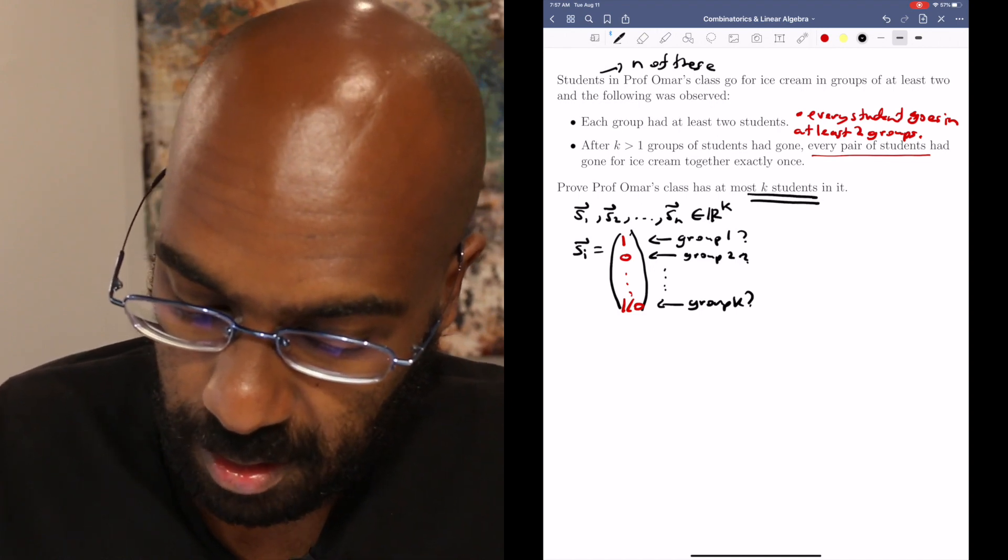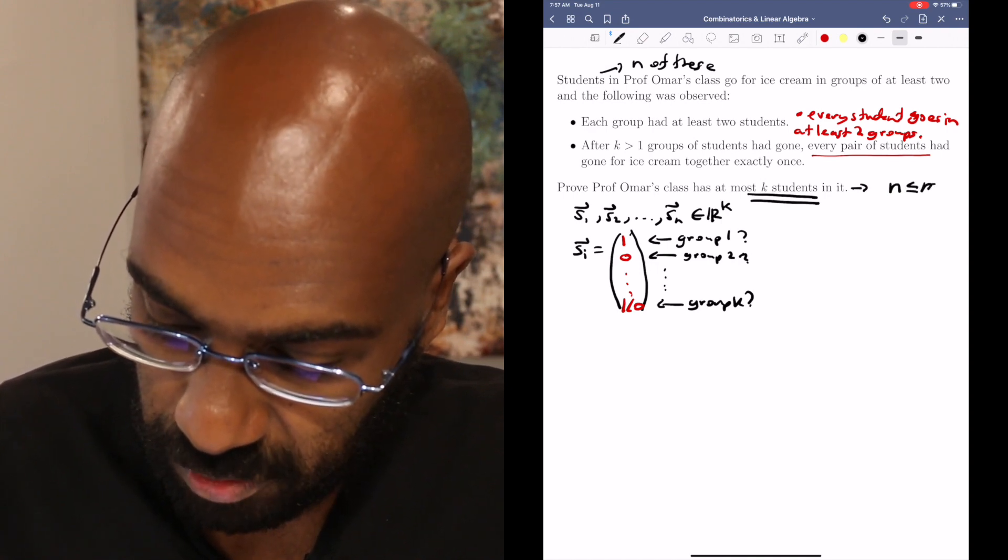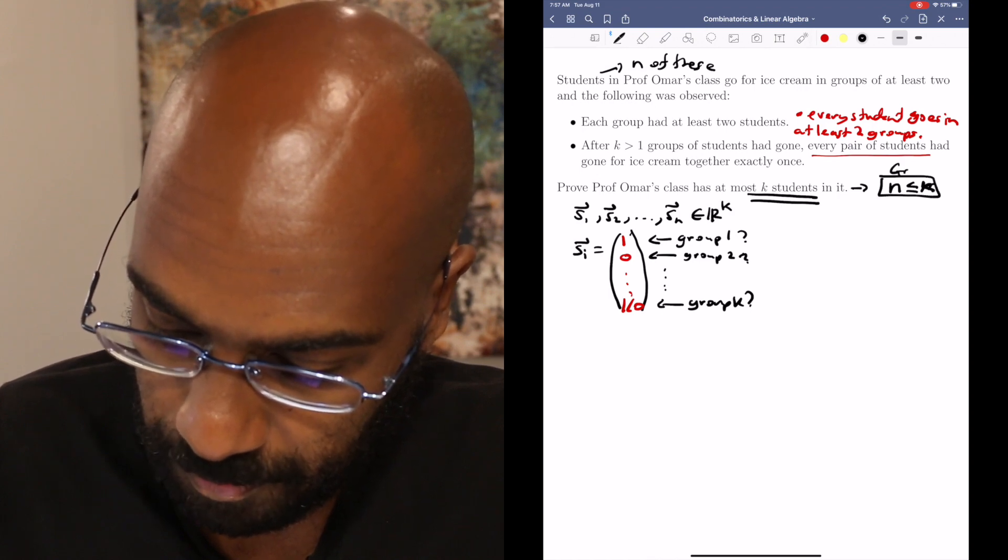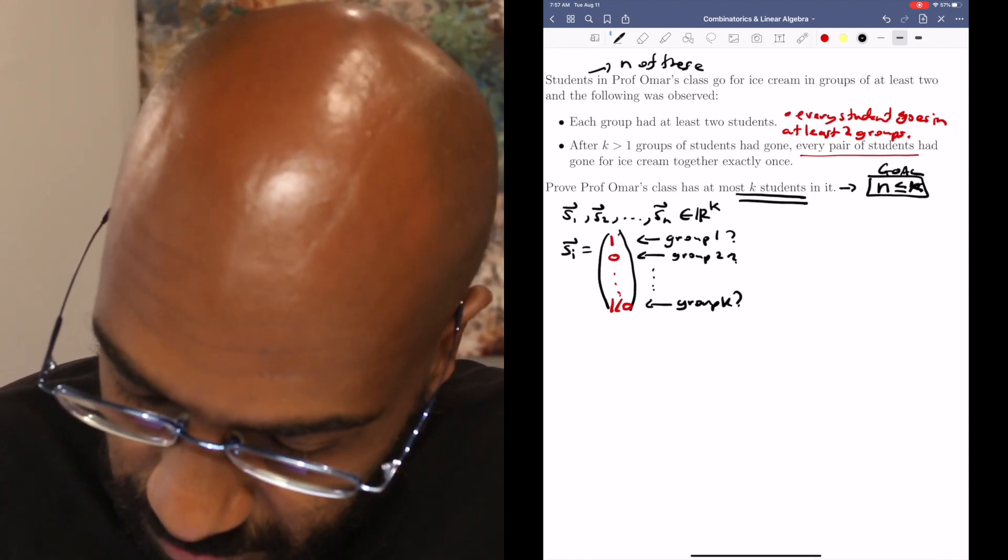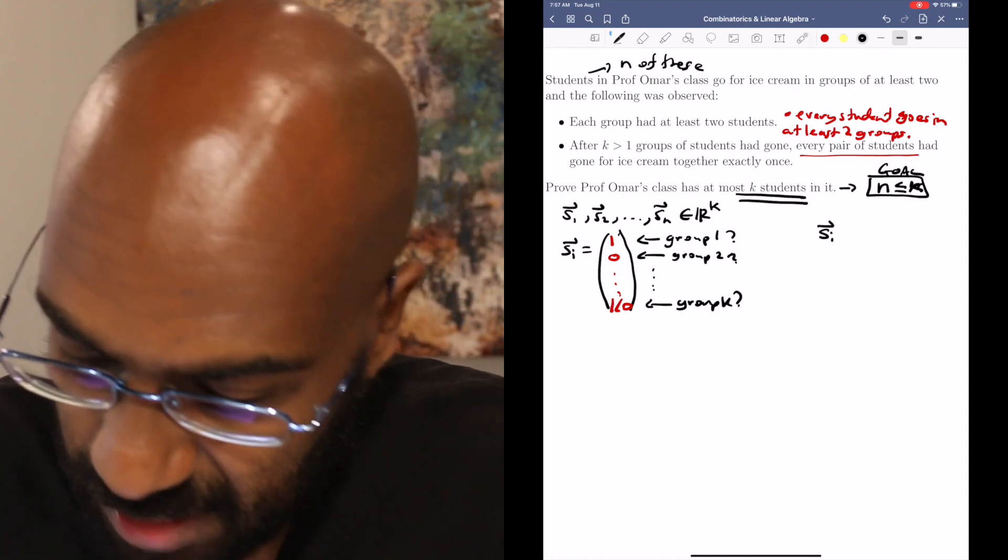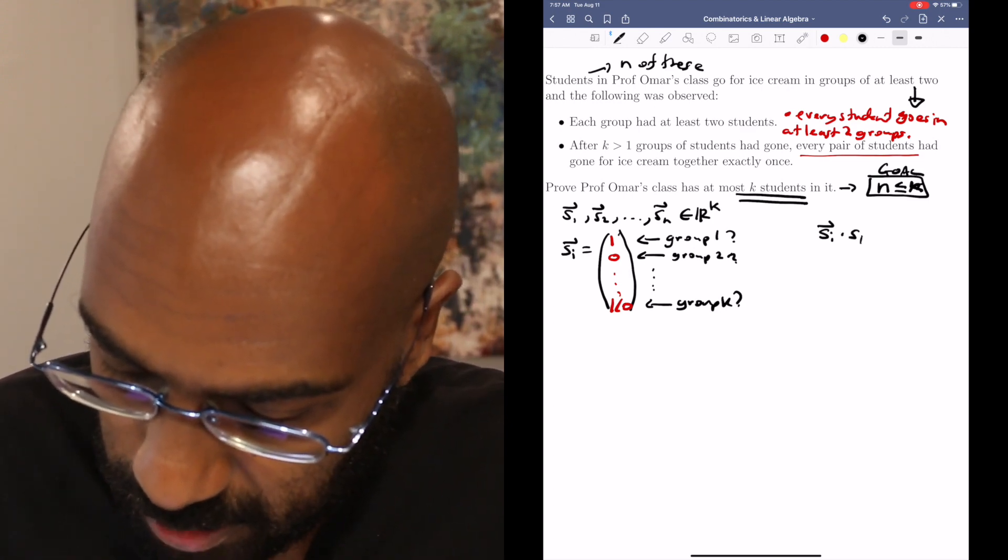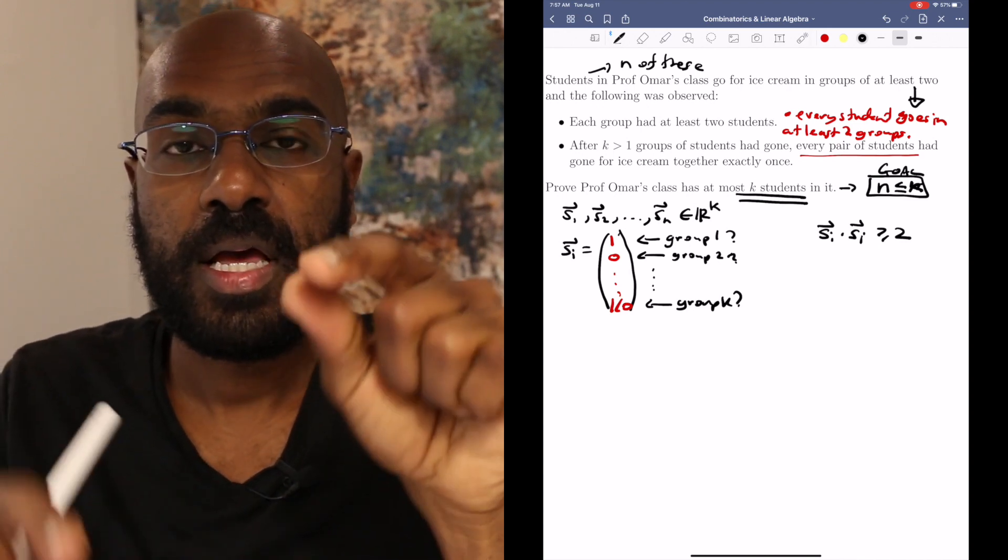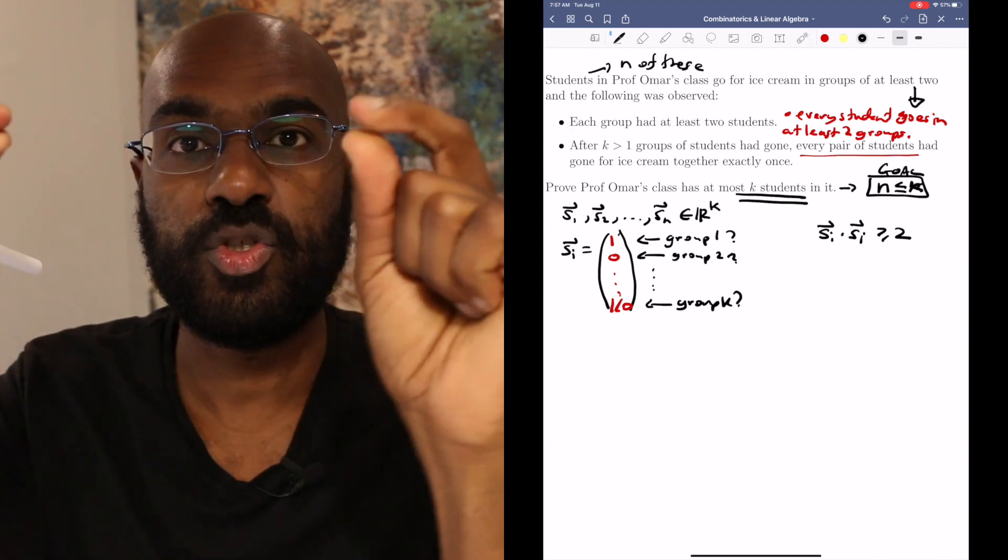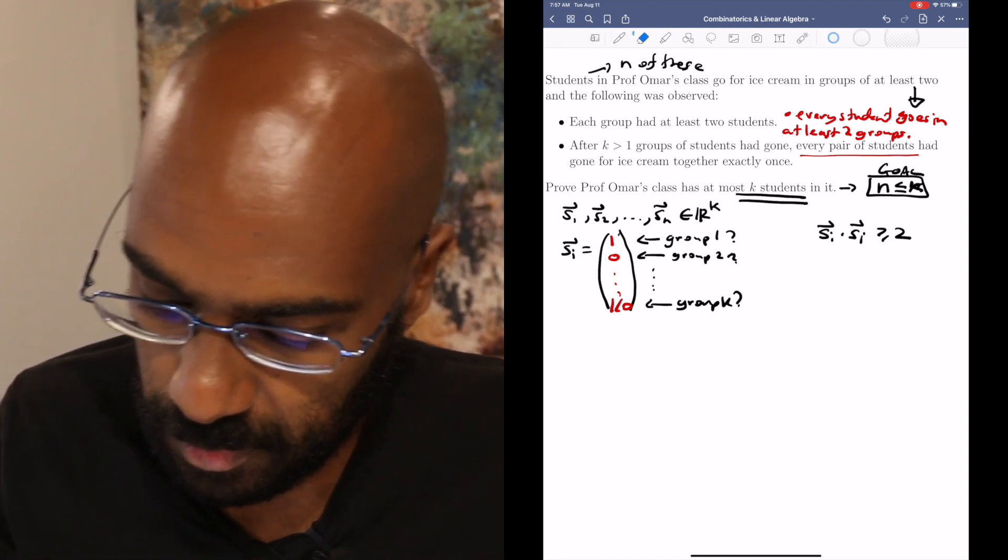Now a note I want to make, that essentially means that we're trying to prove that n, the number of students, is less than or equal to k. That's our goal. All right, so a few observations about these vectors. The first one is because every single student goes on at least two groups. If we take the dot product of the vector si with itself for any i, it's going to be at least two because we're going to have two ones in that vector. And so we'll have the two ones multiplied together in the dot product in one position and the other two ones multiplied somewhere else and added.